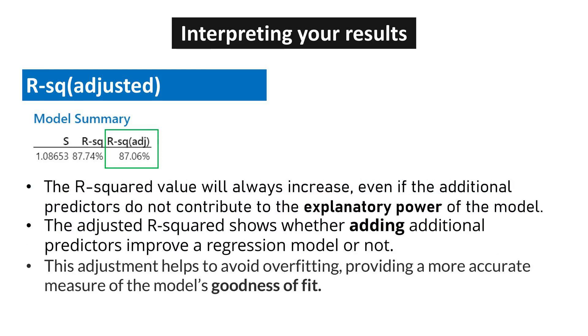The R-squared value will always increase, even if the additional predictors do not contribute to the explanatory power of the model. Adjusted R-squared prevents overfitting by not increasing when additional non-contributing predictors are added to the model.